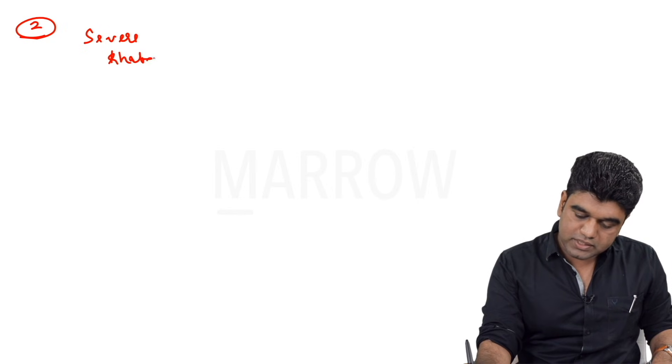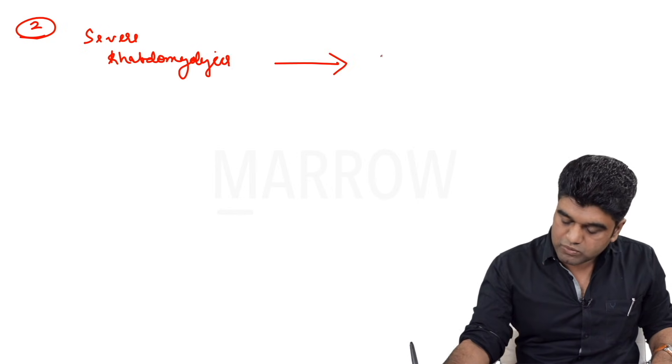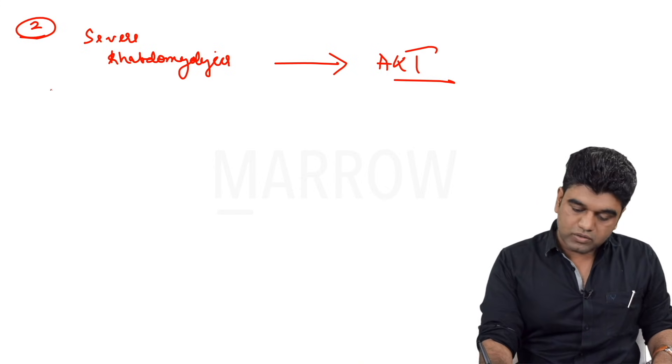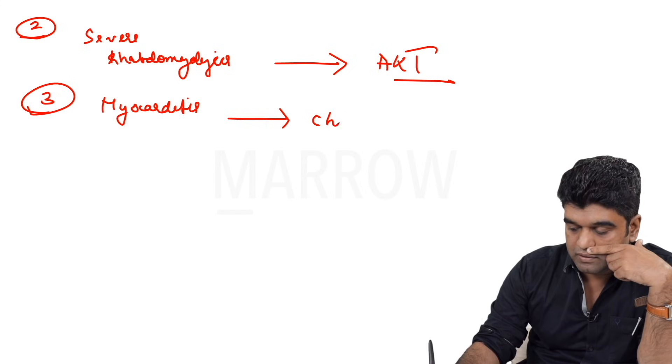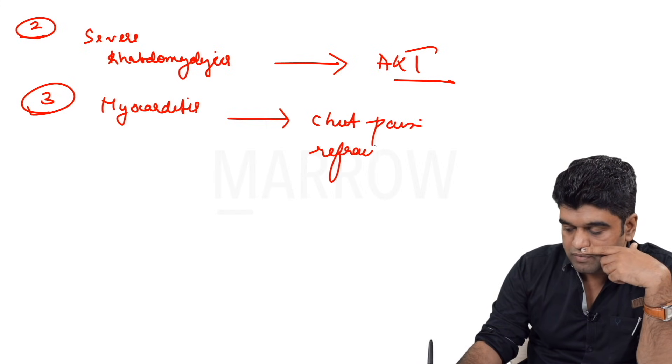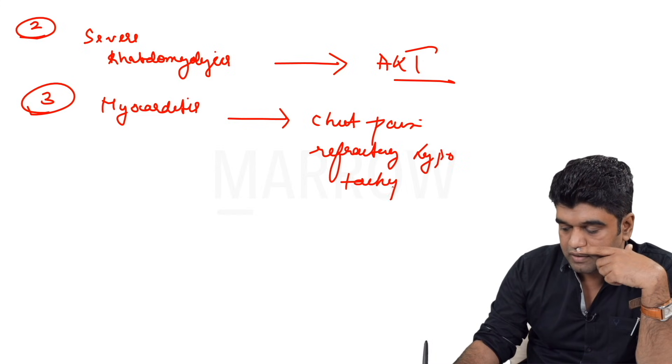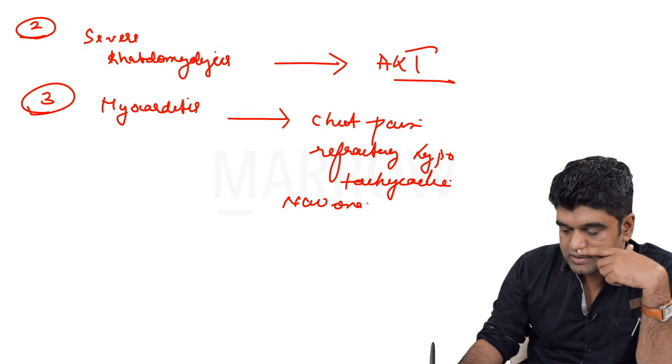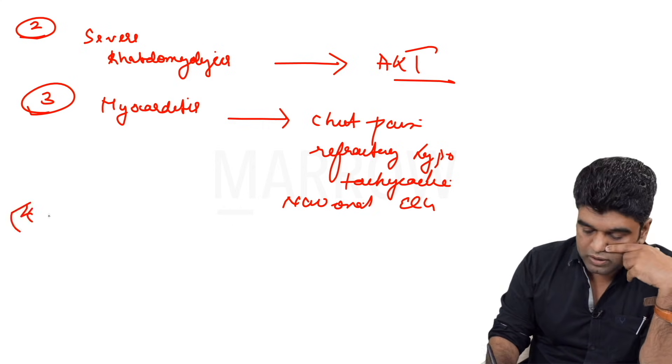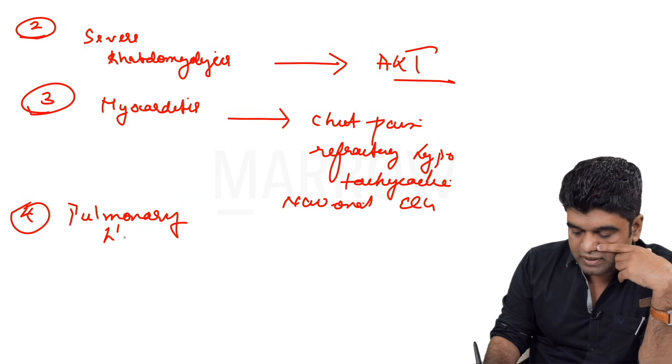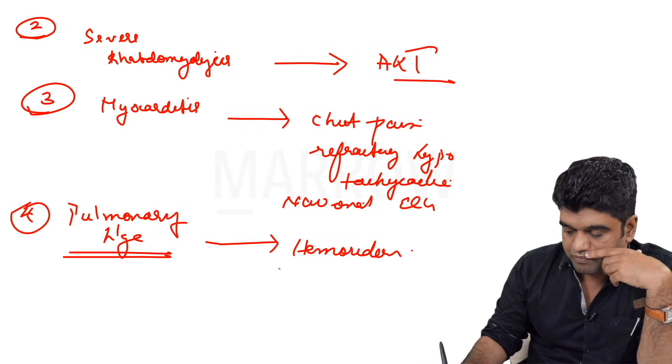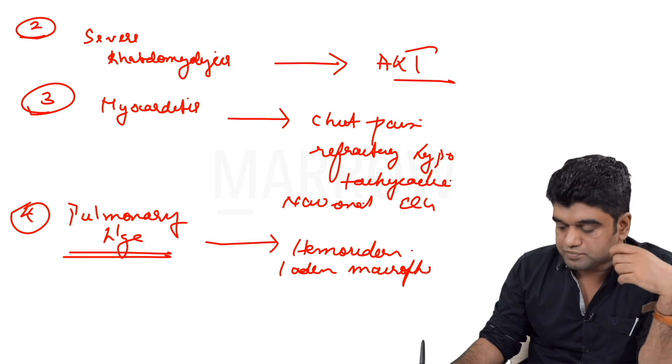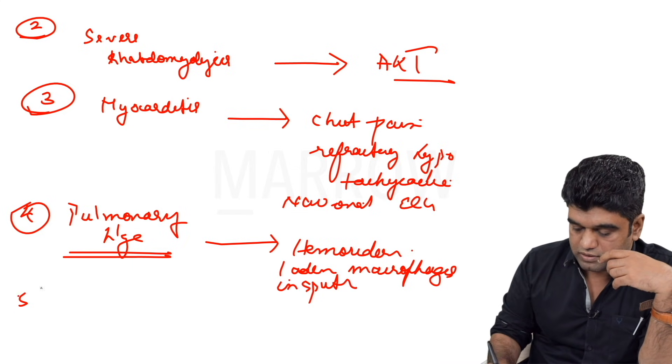Second is a patient who can have severe rhabdomyolysis, and rhabdomyolysis per se can lead to acute kidney injury. Though not very common, many patients have developed myocarditis. Any leptospirosis patient having chest pain, refractory hypotension, unexplained tachycardia, or new onset ECG changes, always think of this. Four, pulmonary hemorrhage. Not very common these days, but when a leptospirosis patient has respiratory distress, always look for pulmonary hemorrhage and hemosiderin laden macrophages in sputum. Then of course the tendency to go into ARDS.